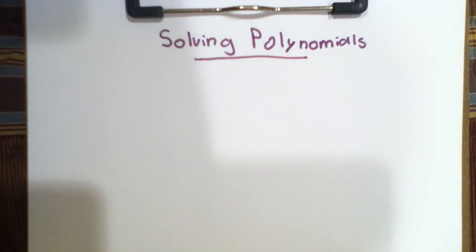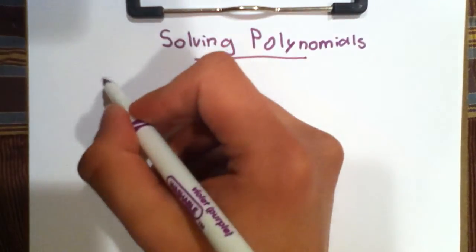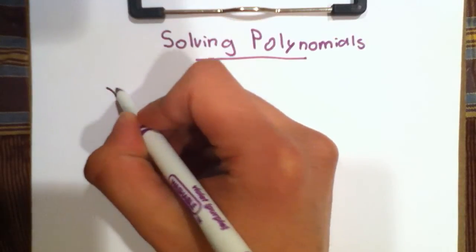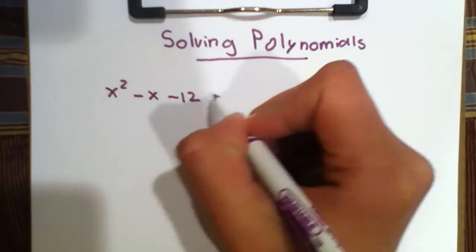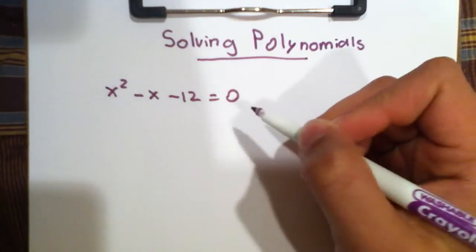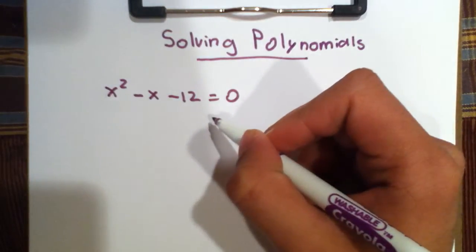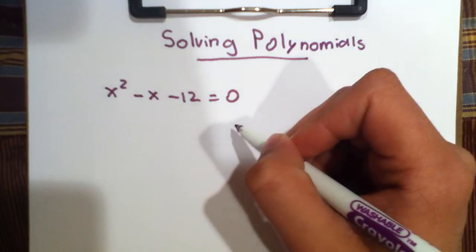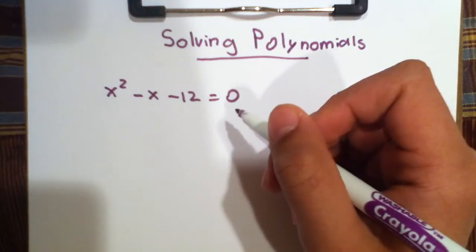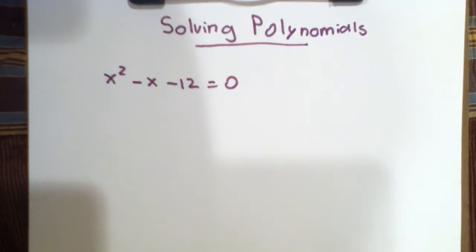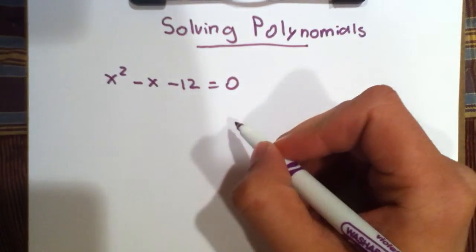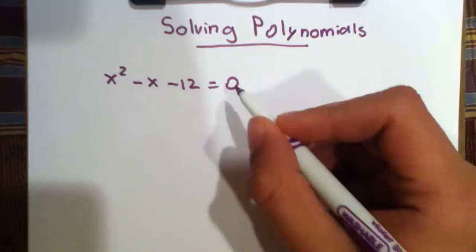Let's start with an example: x squared minus x minus 12 equals 0. Let's solve for x and the x values. So first, let's factor this. I had previously made a video on factoring. It is useful to watch that as well, in addition to this.